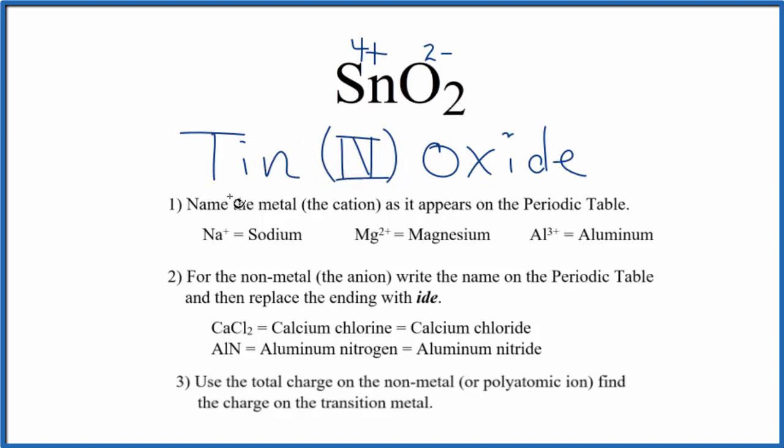If you were given this name, you could figure the formula out. You know that tin has a four plus ionic charge, so you're going to need to have two oxygen atoms, each one that has the two minus ionic charge.